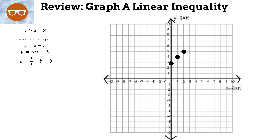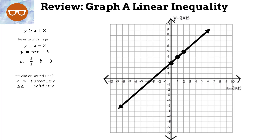Before we graph the line, we have to decide: is it a solid line or a dotted line? To do that, we look at our original inequality. The original inequality is 'greater than or equal to,' so we're going to graph a solid line.